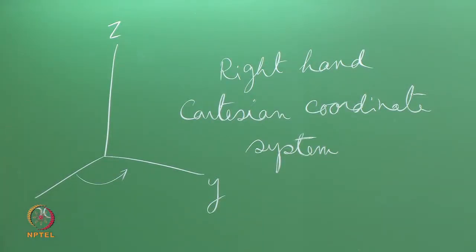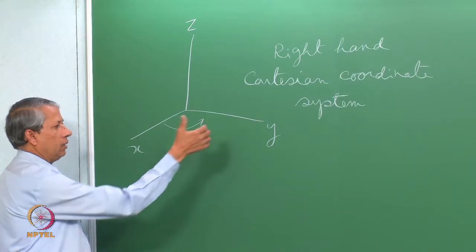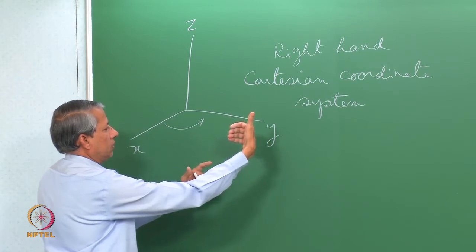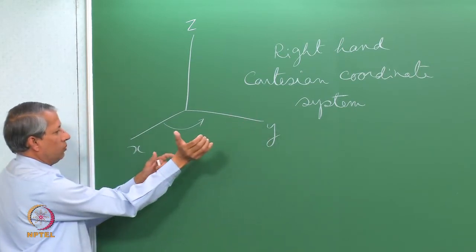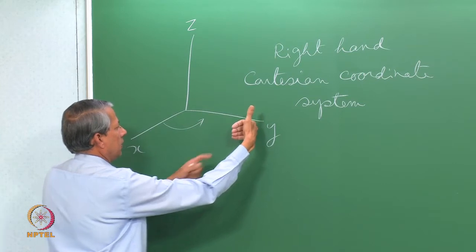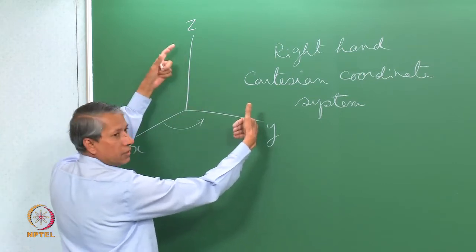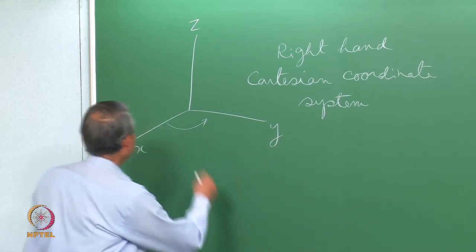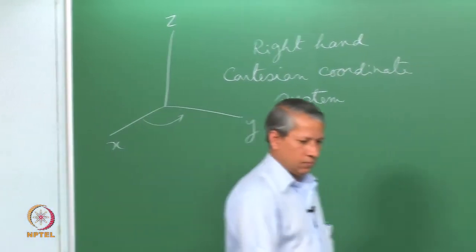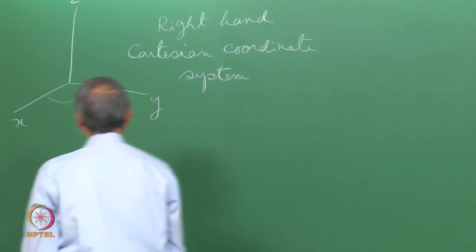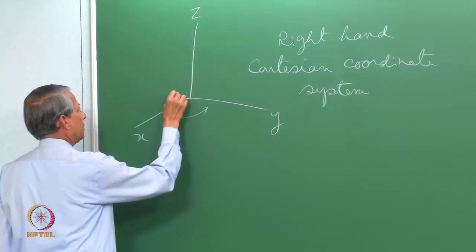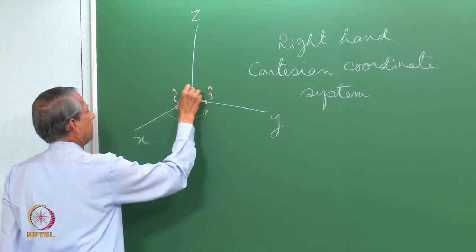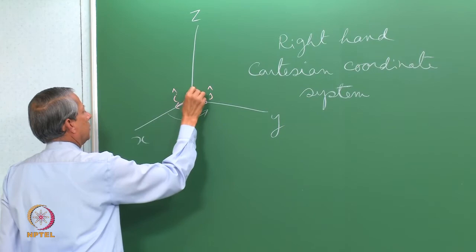We call this the right-hand coordinate system. If you hold your hand and bend the four fingers so that it goes from x to y, then the thumb points to the z direction. That is why it is called the right-hand coordinate system. Here we define unit vectors in these three directions: i, j, and k.